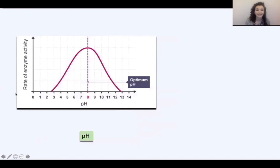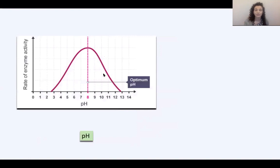This enzyme has an optimum pH of 8 — very slightly alkaline, since neutral is pH 7. Above pH 8, when conditions become more alkaline, that alkalinity will denature the enzyme. The shape of the enzyme changes, it starts to unravel, the shape of the active site changes so the substrate no longer fits, and that's why the rate of enzyme activity is very low at high pH values. Pause the video, sketch out that graph, and if you're feeling confident try to label it with what's happening and why.